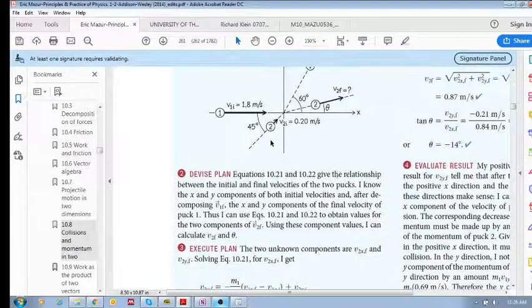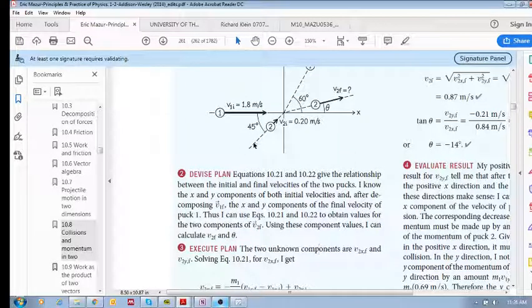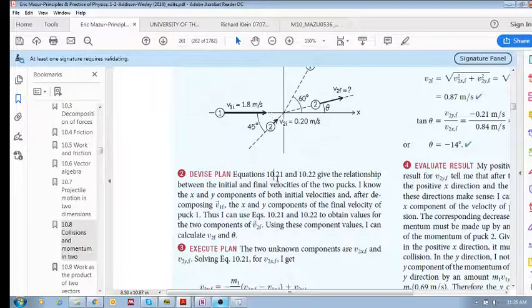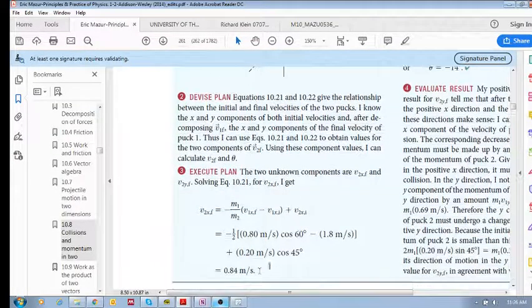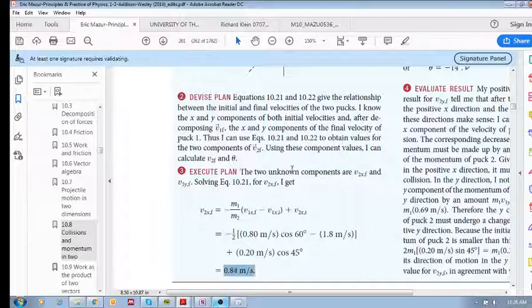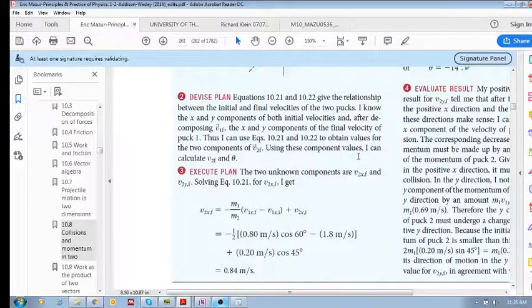So the x component of the initial v2 velocity, that would be 0.2 times cos 45. And we get 0.85 and we get 0.84, so v2x final, this x component over there, is 0.84 meters per second.